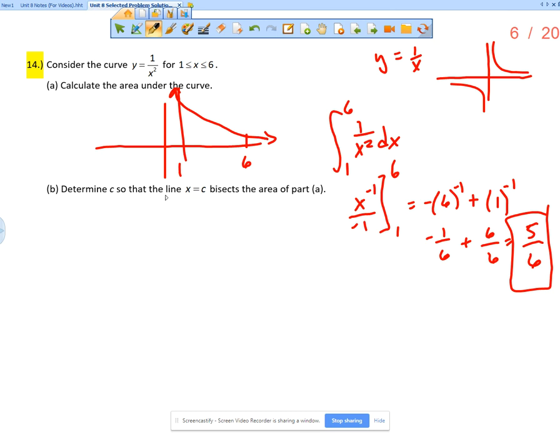Determine C so that the line x equals C bisects the area from part A. So I'm going to draw this again. Here's the area from part A, 1 to 6. Now, C is some value here where the vertical line bisects, meaning these two areas are equal. So if those two areas are equal, what does that mean?